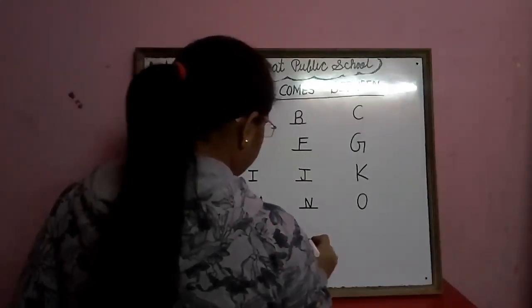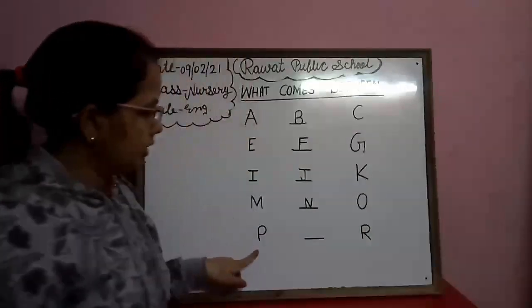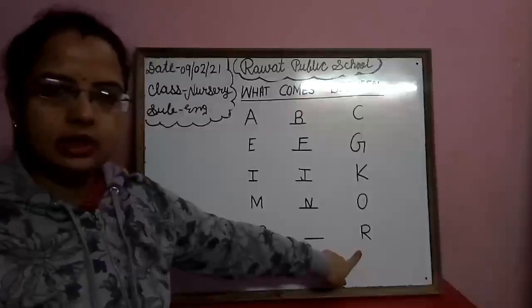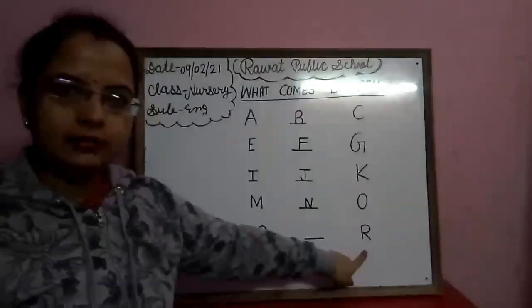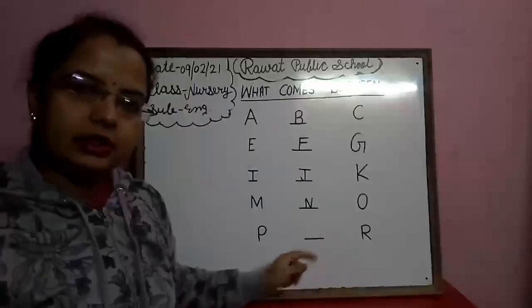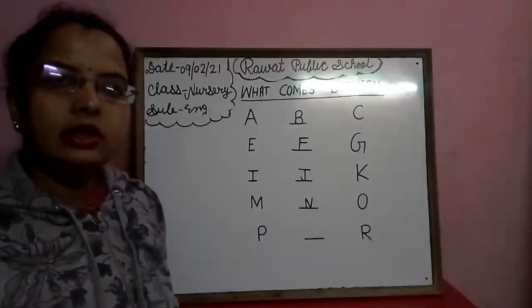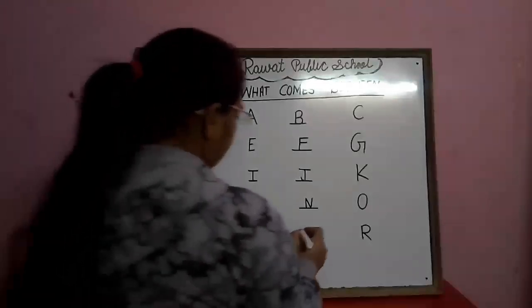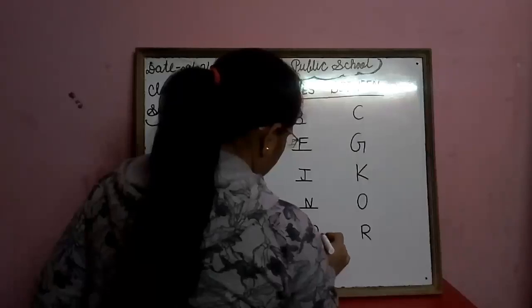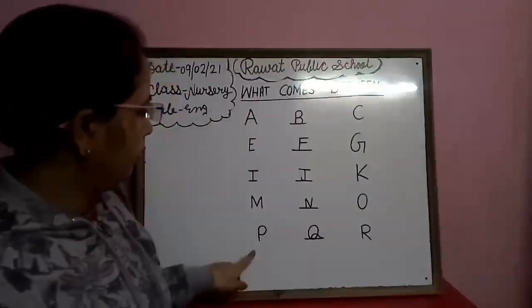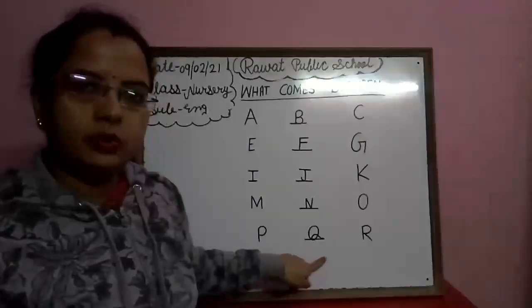This is P and this is R. What comes between P and R? P aur R ke beech mein konsa letter aata hai? Q. So we will write here Q. P, Q, R.